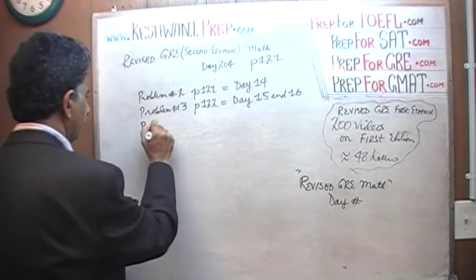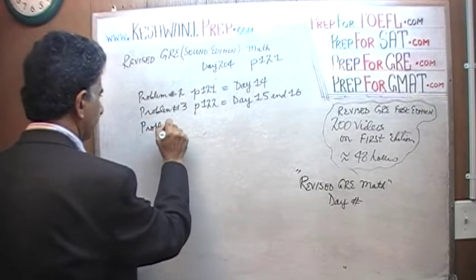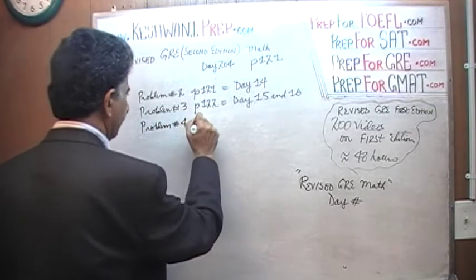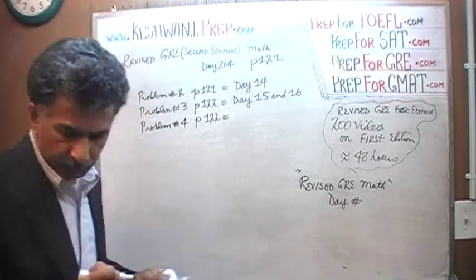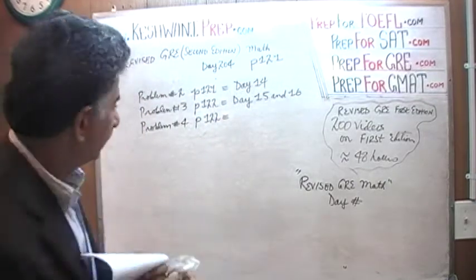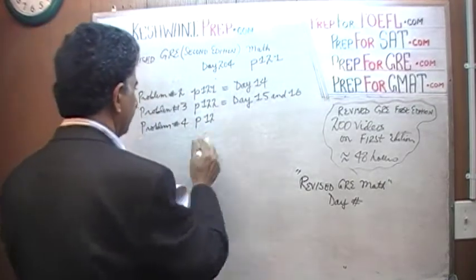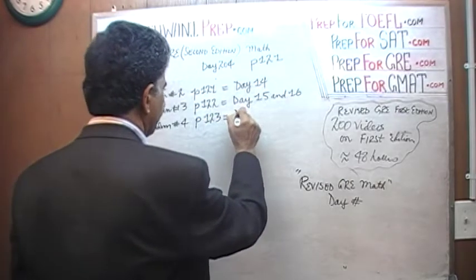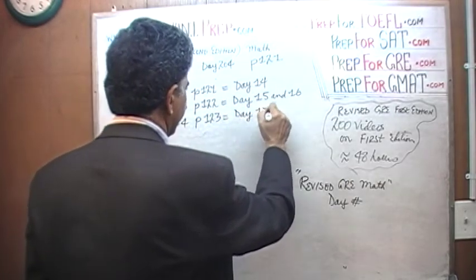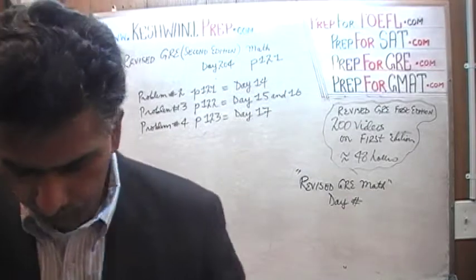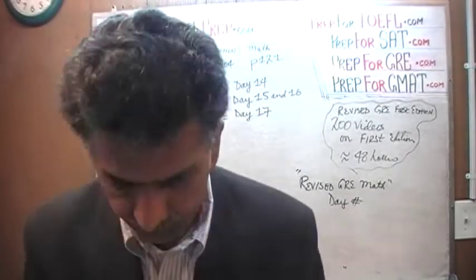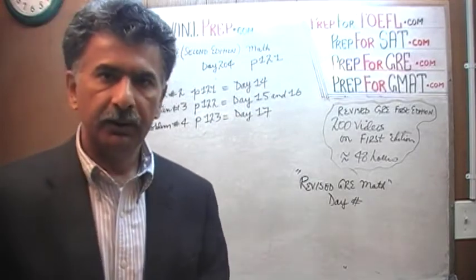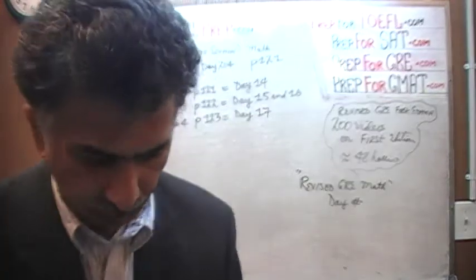And finally, problem number 4 is on page 133. That is Day 17. The reason I say finally is because that is the end of that topic, and then on the following page they start something else. I am going to break the content up in a logical sequence where it seems rational to break it.